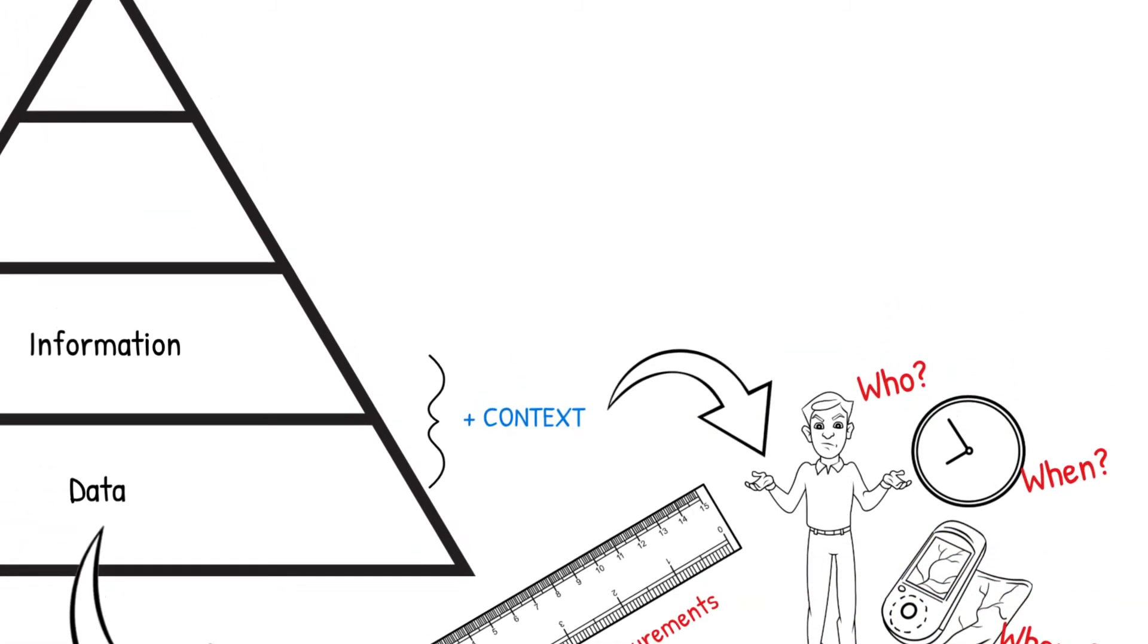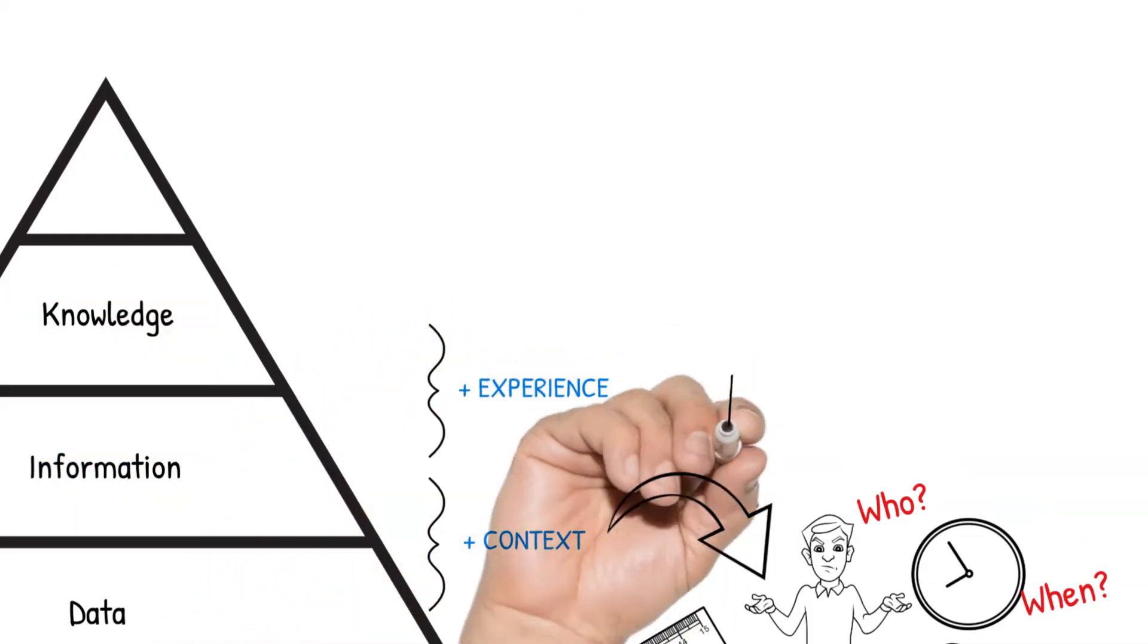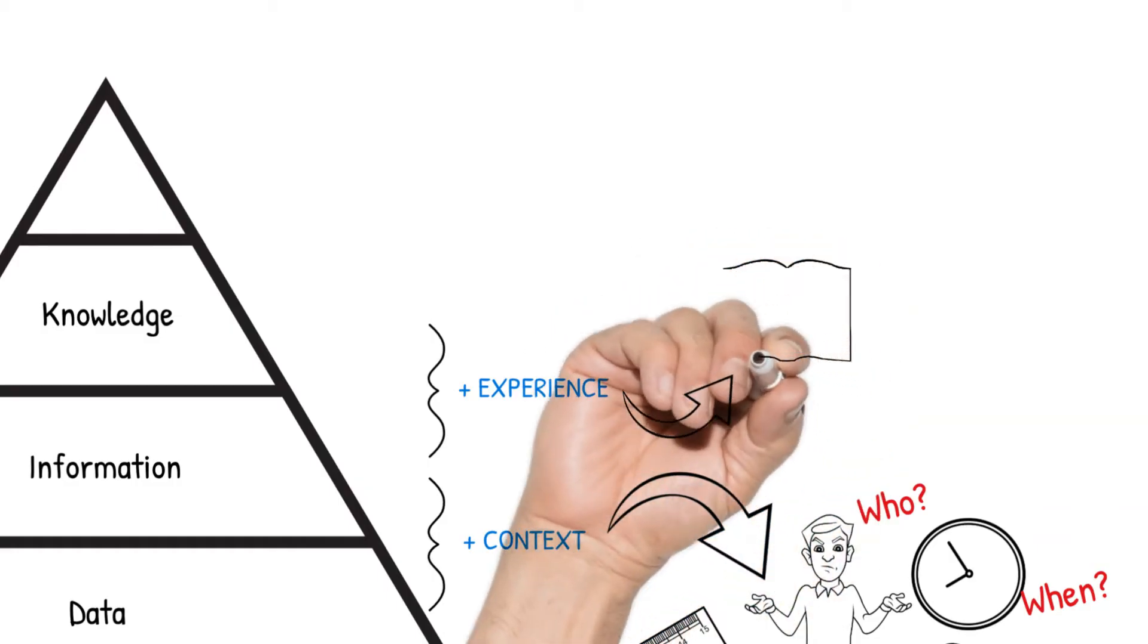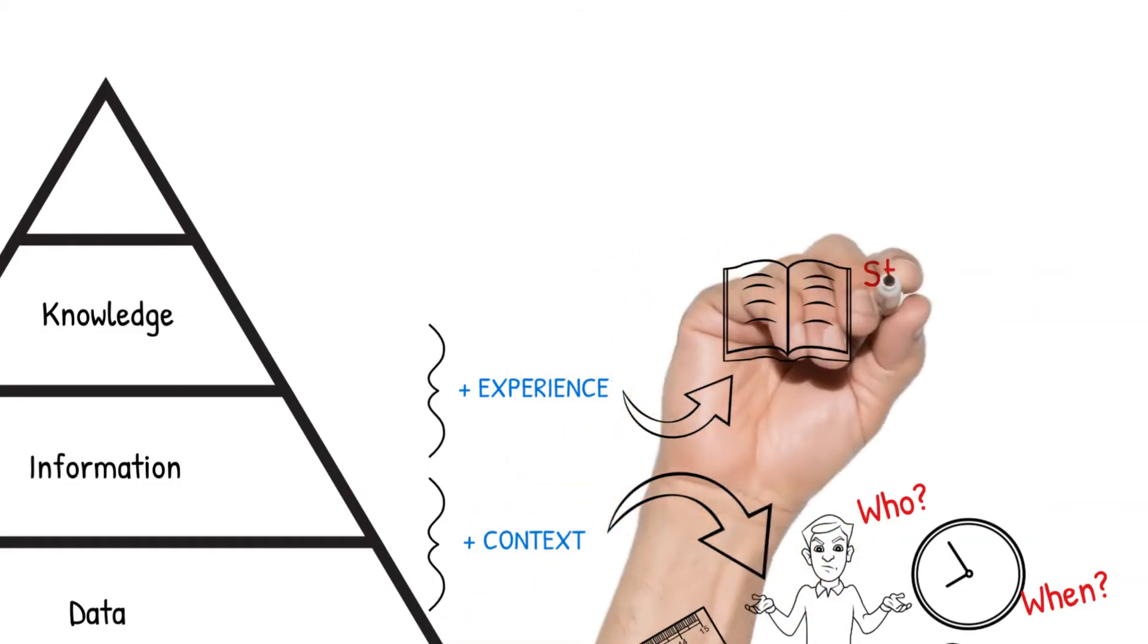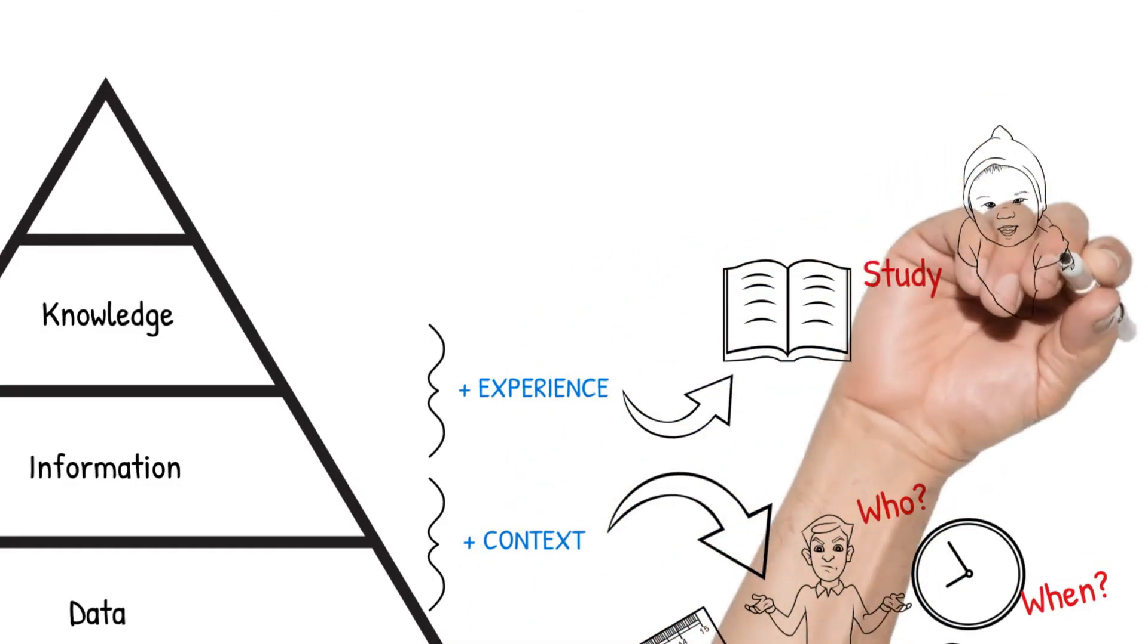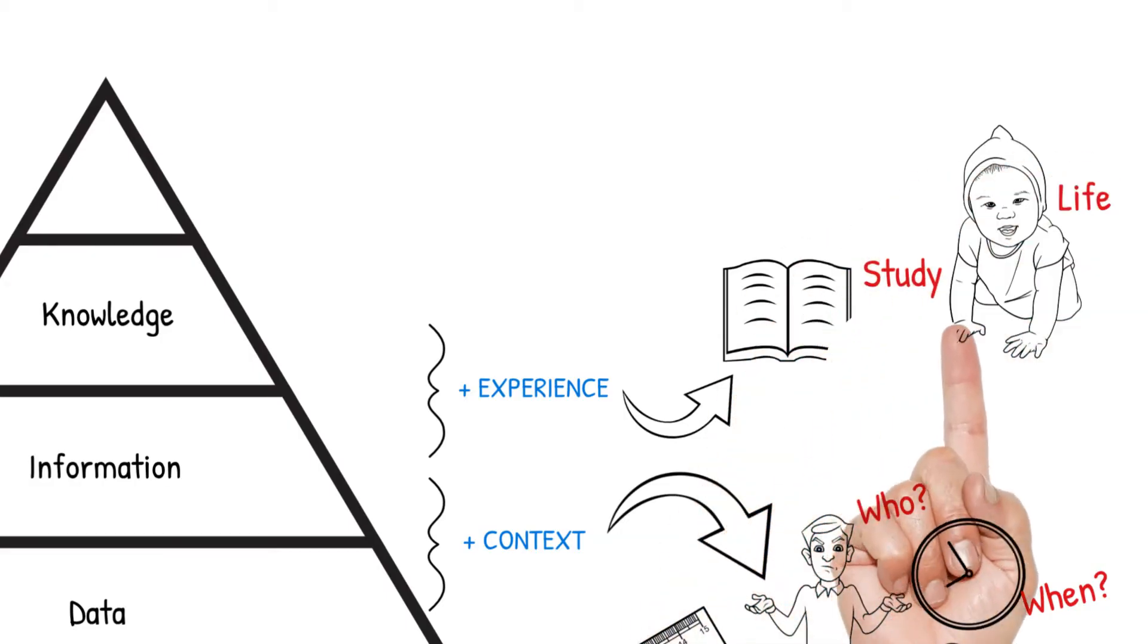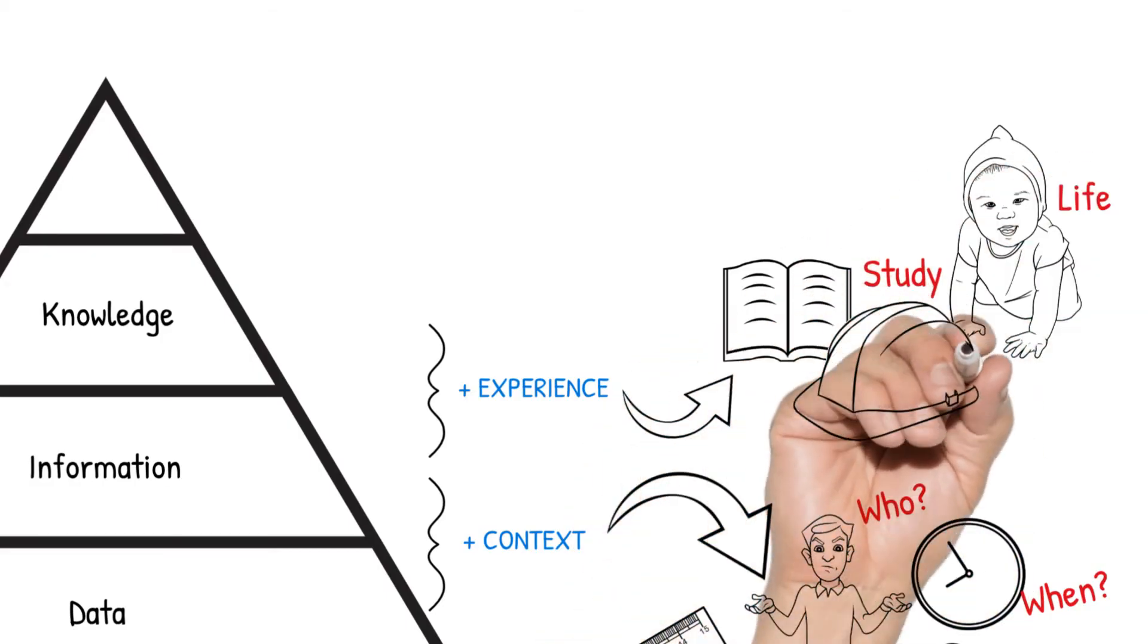The third step in the pyramid belongs to knowledge. Knowledge is information with the addition of experience. Experience can be gathered second-hand through studying books such as in college. Experience is also accumulated first-hand from life and work experiences. With knowledge we are now incorporating subjective expertise, as different people will have different experiences to shape their understanding of information.